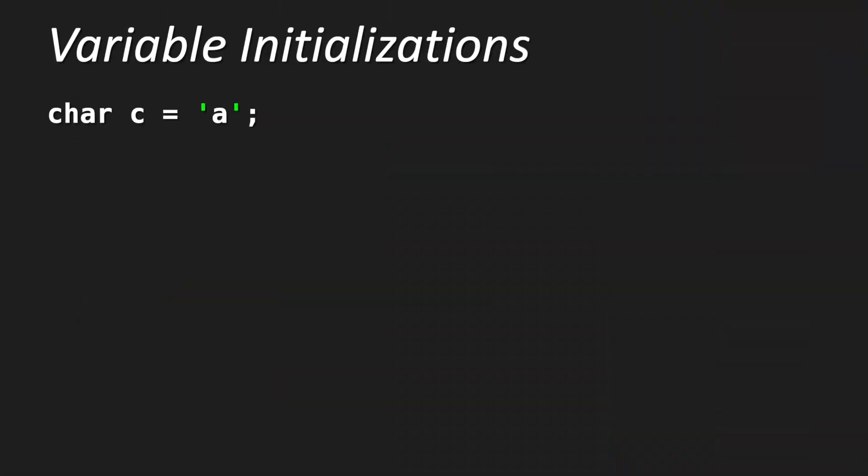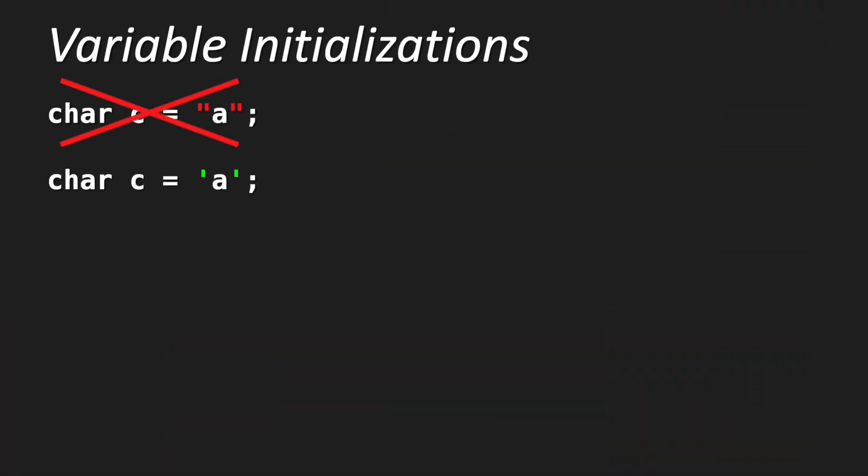If we have a char value, we write char c equals and then the character we want, for instance a, but we have to put it in single apostrophes. This is important — use single apostrophes, not double ones. If you use double ones, you would indicate to the compiler that this is a string, and we get a compiler error because strings don't fit into char. So if you write a char, use single apostrophes.